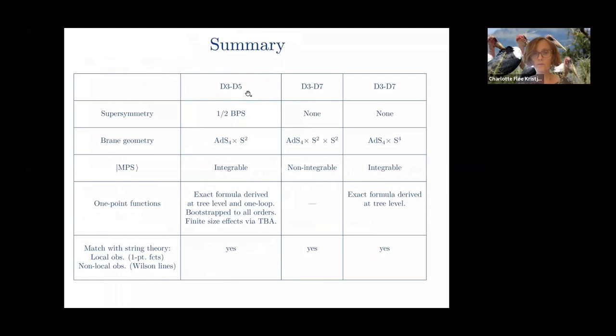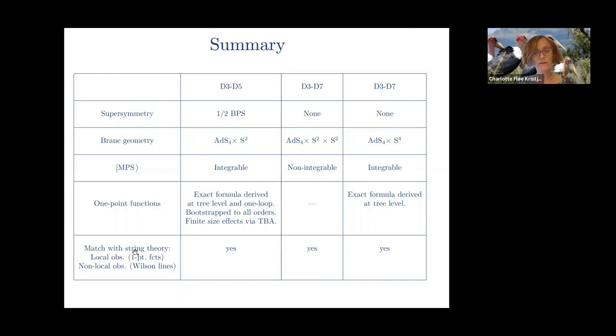In summary, defect setups with varying amounts of supersymmetry have been considered — some integrable, some not. For integrable cases, exact formulas for one-point functions have been derived at tree level and one loop; in the supersymmetric case it is possible to bootstrap results to all loop orders and include finite-size effects via the TBA. A complete match between string theory and gauge theory has been found in a certain double-scaling limit, for both local and non-local observables, and for both supersymmetric and non-supersymmetric setups.